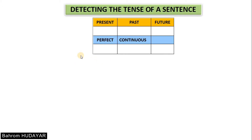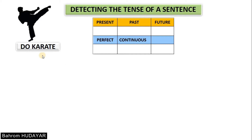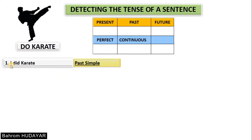You have to do a task before we start making sentences in English. Your task is this: make up 12 different sentences about doing karate in your native language. Write down 12 different sentences about doing karate in your mother tongue. For example, how do you say 'I did karate' in the past tense in your native language?